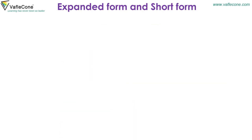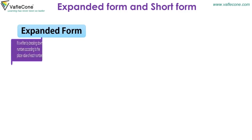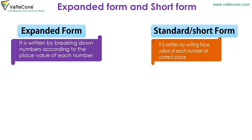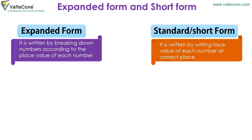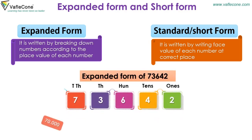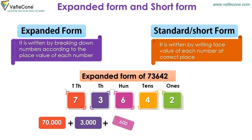Expanded Form and Short Form. Expanded Form is written by breaking down numbers according to the place value of each digit. Standard or Short Form is written by writing the face value of each digit at the correct place. For example, the expanded form of 73,642 is 70,000 + 3,000 + 600 + 40 + 2.